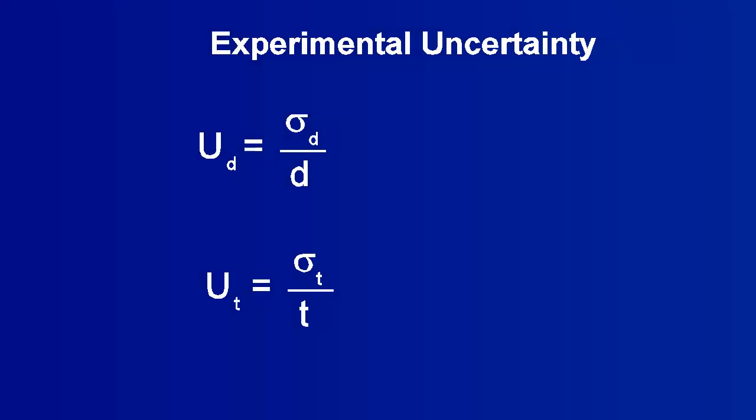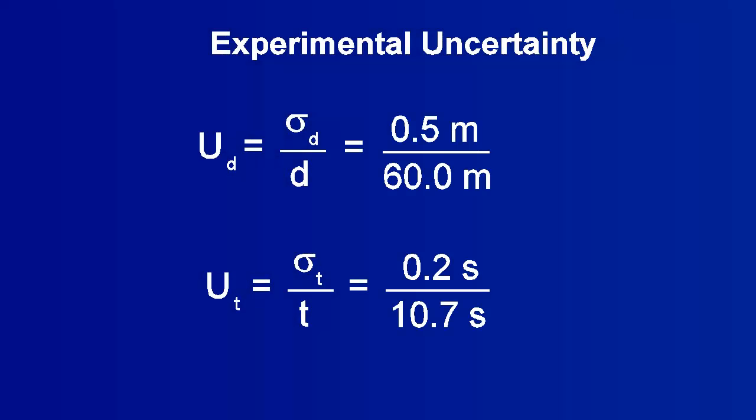For example, an uncertainty of 0.5 meters over a distance of 60 meters indicates far more accuracy than an uncertainty of 0.2 seconds over a time of 10.7 seconds.